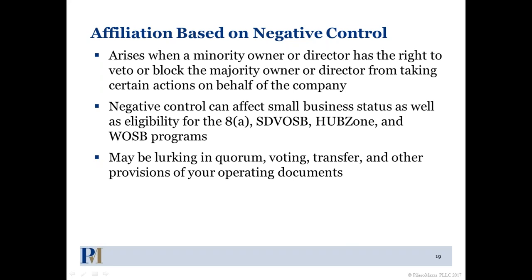The negative control issue is probably the biggest one we see. If you take a controlling ownership position in your investment, there's automatic affiliation because controlling ownership means affiliation and you can't rebut that — stock ownership is irrebuttable control in SBA's eyes. But even if you don't have a controlling ownership position — say 49% or less of the voting stock — you could still be viewed as controlling the company if you have negative control, meaning you have the right to block the majority owner from taking certain actions through board or shareholder voting mechanisms.